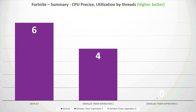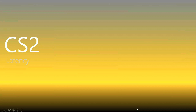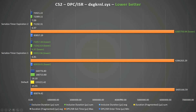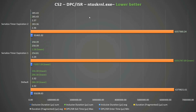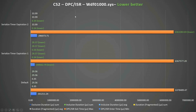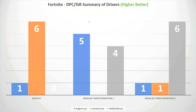In CS2: for the DPC/ISR kernel, serialized timer expiration is a good choice; for the EndOS kernel, default is better but results are very close to serialized timer expiration value one; WDF is better with serialized timer expiration value one. Overall, the DPC/ISR kernel is better with serialized timer expiration value one, the EndOS kernel is better by default, and WDF is better with serialized timer expiration value two — so it depends which driver you want to optimize.